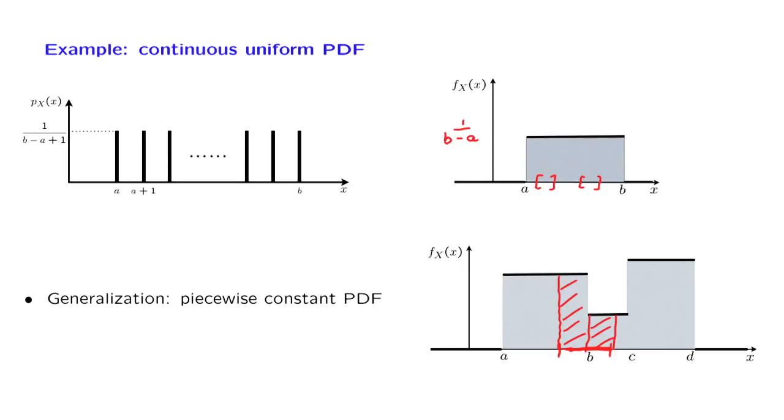So at this point, our agenda moving forward will be twofold. First, we will introduce some interesting continuous random variables. We just started with the presentation of the uniform random variable. And then we will also go over all the concepts and results that we have developed for discrete random variables, and develop them again for their continuous counterparts.